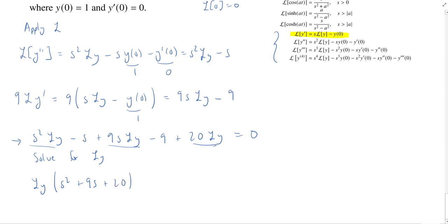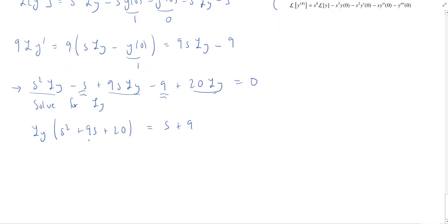What about the other stuff? Well, there's a minus s, and I'm going to toss this to the right-hand side. So minus s becomes a positive s, and minus 9 becomes a positive 9. We've handled everything on that left-hand side. We're trying to solve for L of y, so I'm going to divide by s squared plus 9s plus 20. So this implies Ly equals s plus 9 over s squared plus 9s plus 20.